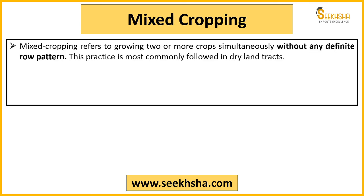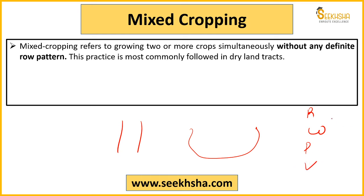After inter-cropping comes mixed cropping. In inter-cropping you were laying rows — one row of wheat, one row of rice. In mixed cropping, that does not happen. In mixed cropping, a farmer takes a pot, adds a small quantity of rice seeds, some wheat seeds, some pulses, and maybe some vegetables — a little of each — and mixes them all together.